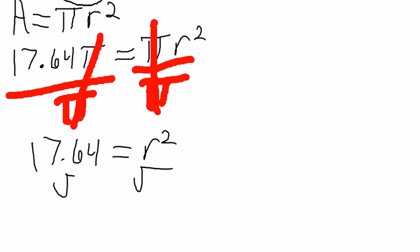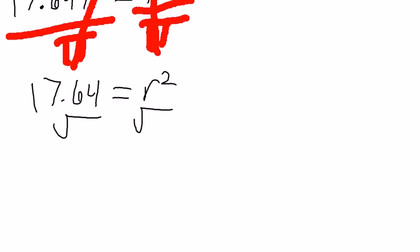So I'll take the square root of each side, and I only want the positive square root since we're dealing with length here. I'll go ahead and type that in - square root of 17.64 - and it comes out to 4.2 exactly. So my radius is 4.2.